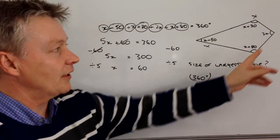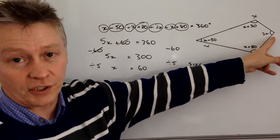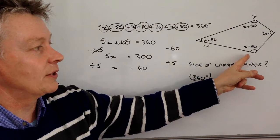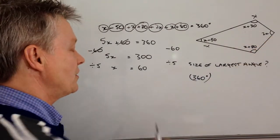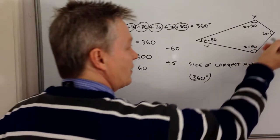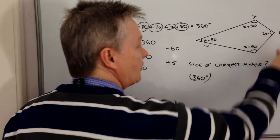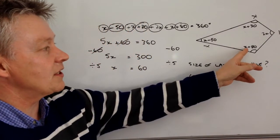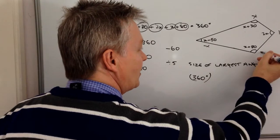I think it's either going to be this one, which is 2X, or this one, which is X plus 80. Well, 2X is going to be two lots of 60, so this is going to be 120 degrees. And this is going to be 60 plus 80, 140 degrees.